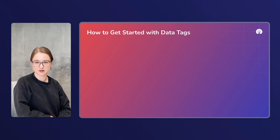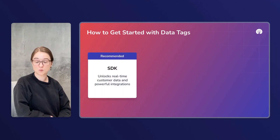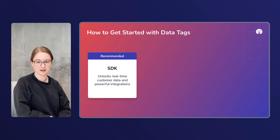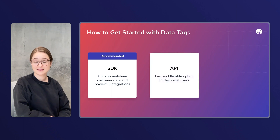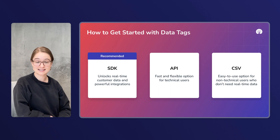There are three primary methods that our customers use to get started with data tags. First is the OneSignal SDK. I highly recommend using this method if it works for you and your team — it will unlock real-time customer data and powerful integrations, plus it's a lightweight SDK that's easy for developers to integrate into your app or website. The API is a great option for technical users who are looking for a fast and flexible setup. And the CSV upload is an easy-to-use option for non-technical users who don't need real-time data.